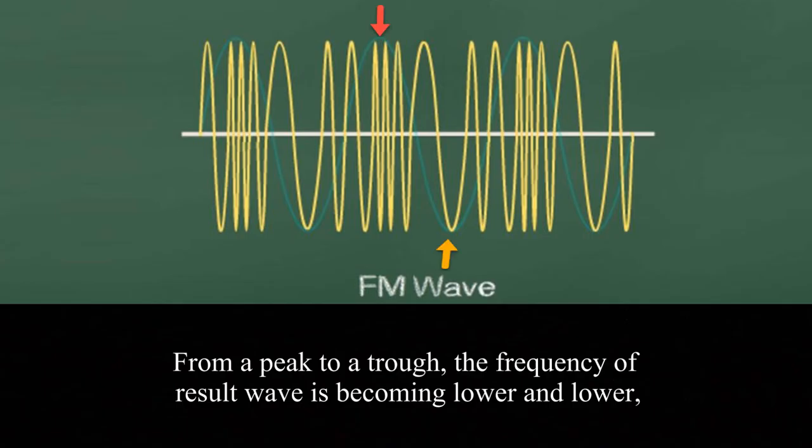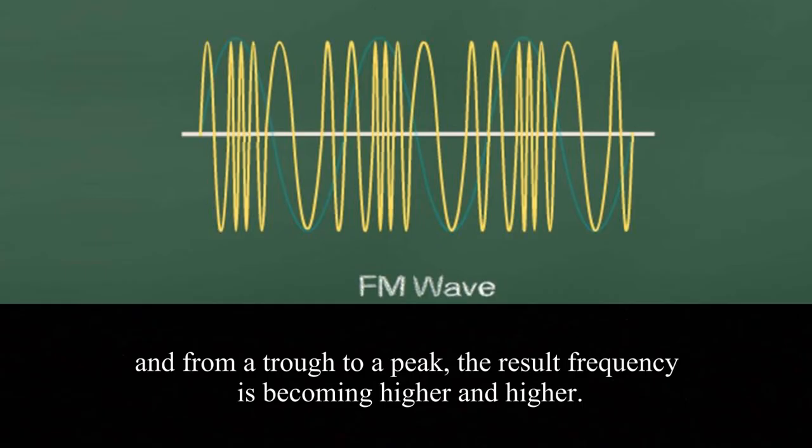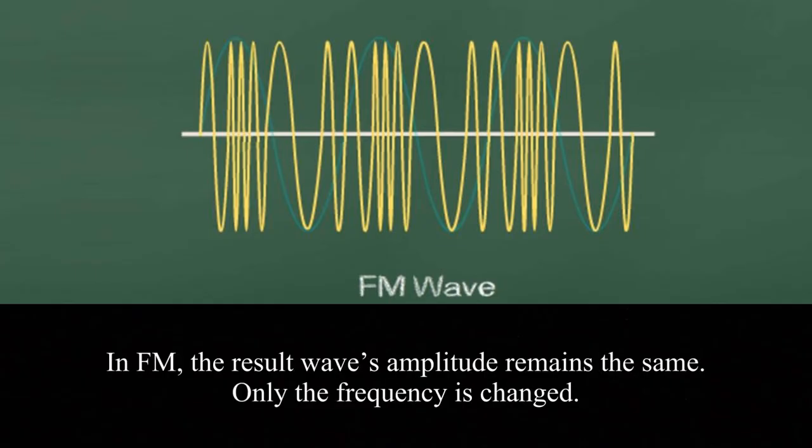From peak to trough, the frequency of the result wave is becoming lower and lower, and from trough to peak, the result frequency is becoming higher and higher. In FM, the result wave amplitude remains the same, only the frequency is changed.